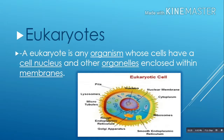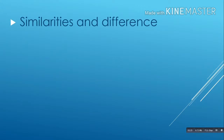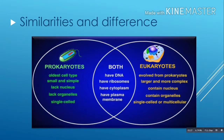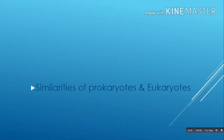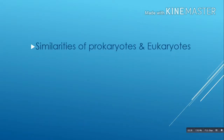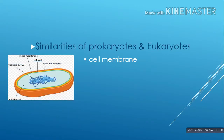Both prokaryotes and eukaryotes have their own similarities and differences in terms of uses, functions, and parts. Similarities of prokaryotes and eukaryotes. The first one is the cell membrane. Both have this lipid bilayer, which is an arrangement of phospholipids and proteins that acts as a selective barrier between the internal and external environment of the cell.